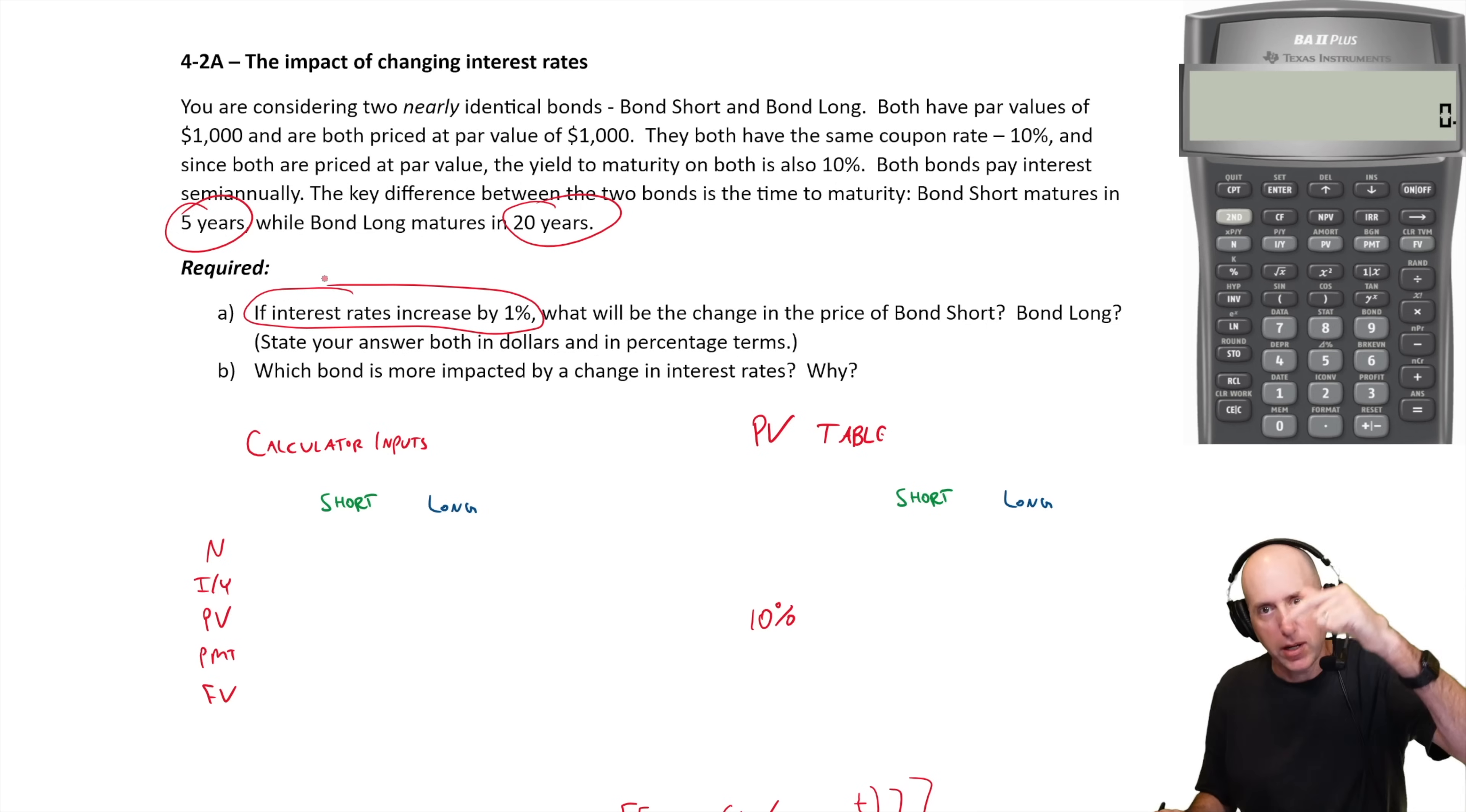The answer is the bond price goes down. When you can buy similar bonds at a higher interest rate, our bond becomes less attractive, less people want to buy it, and therefore our price will come down. That's what we're expecting to see.